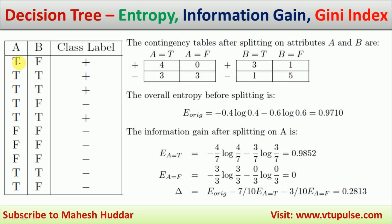If you see here, there are 7 true examples. Out of that, 4 are positive and 3 are negative. So that is what is written in this case: 4 are positive and 3 are negative.